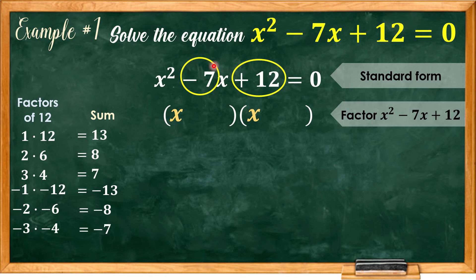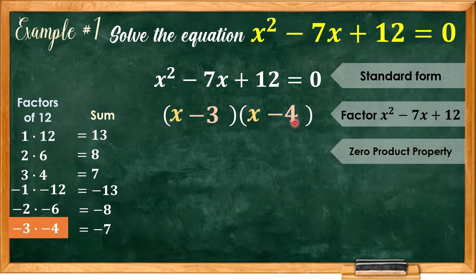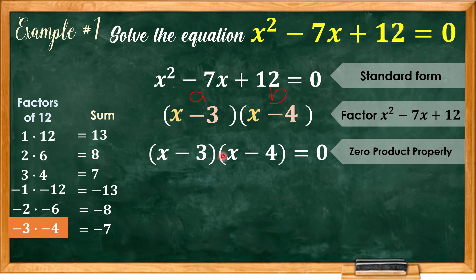We are looking for the sum equal to negative 7. Since the last factor pair gives us the correct sum, we will consider negative 3 and negative 4 as our pair. Therefore, the factored form is the quantity x minus 3 times the quantity x minus 4. Now let us apply the zero product property, which states that each factor should be set equal to zero.